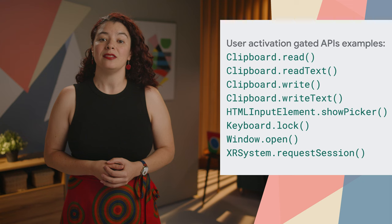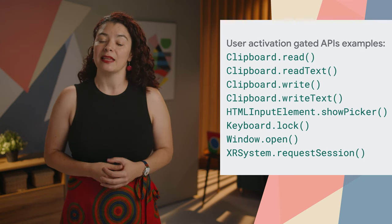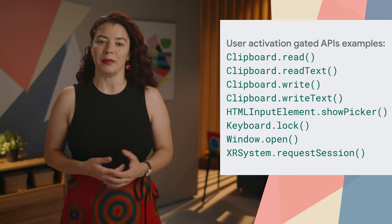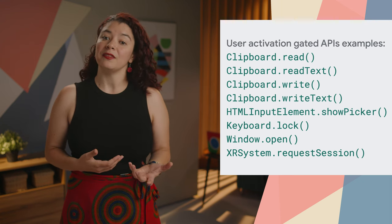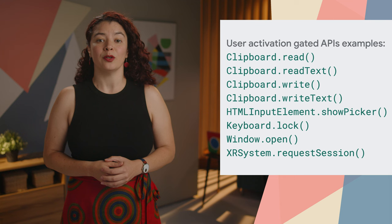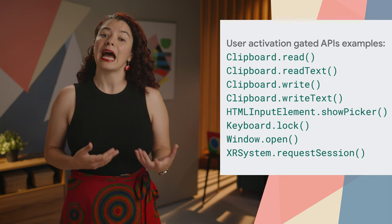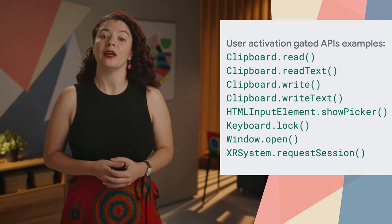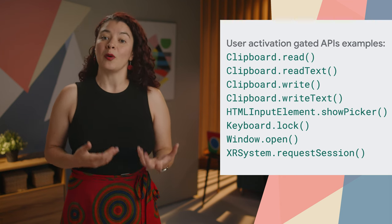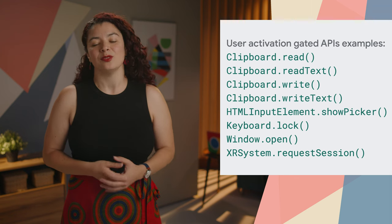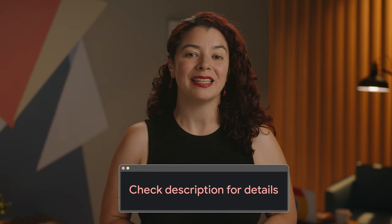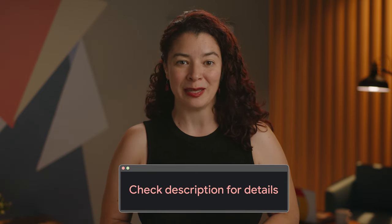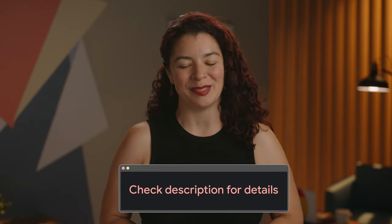This makes user activations in a Document Picture-in-Picture window usable inside its opening window and the other way around. This change makes using user activation-gated APIs more ergonomic, since often event handlers in the Document Picture-in-Picture window are actually run in the opener's context, so the opener's context needs access to the user gesture. To learn more and access the Propagate User Activation demo, check out the post linked in the description.